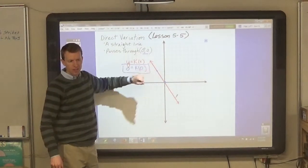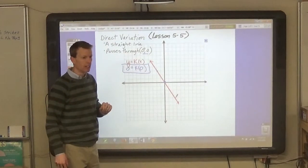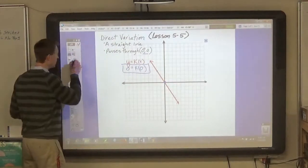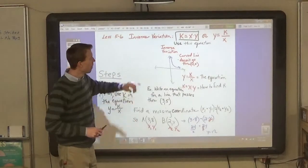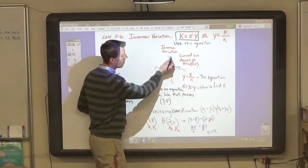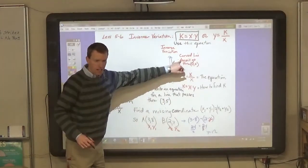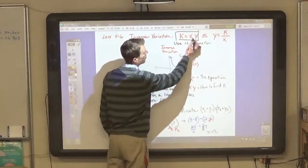Is it possible to have a direct variation and an inverse variation together? No, it's either direct or inverse. The reason is that inverse variation is a completely different kind of line. Inverse variation gives us a line that is a curved line. It doesn't ever go through 0, 0 because it uses a different equation.